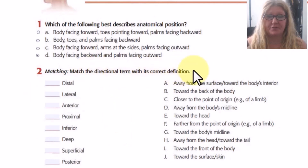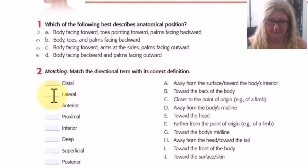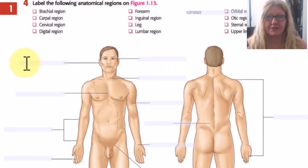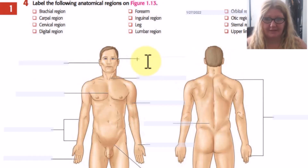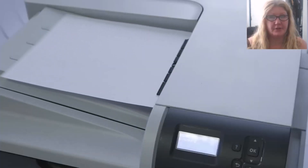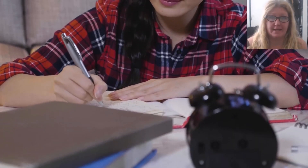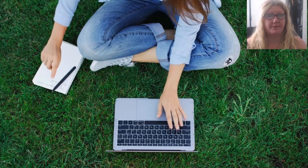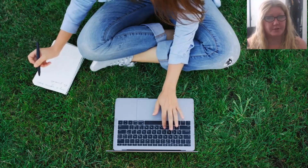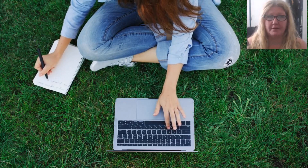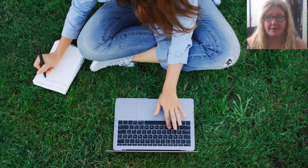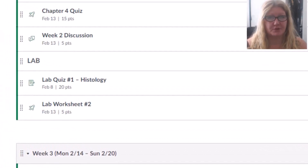You'll match the directional terms with their correct definitions — you can type in the boxes provided. Many of these worksheets will include pictures and images that you must label; you can label by hovering your cursor over one of the boxes and simply typing. If you have any issues, you can also just print it out, complete it by hand, and upload photos or scans of your documents. Lab worksheets do not have to be done in lab — you can do those on your own time, and they are due on Sundays by 11:59pm.